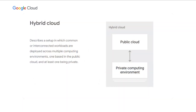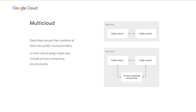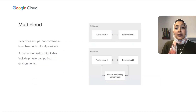So what is the difference between hybrid and multi-cloud? If we take hybrid first, this is where you have workloads deployed across multiple environments — one being a private on-prem data center and one in the public cloud. Multi-cloud, on the other hand, combines at least two public cloud environments, but you can also have a private computing environment as part of your multi-cloud setup. So really, multi-cloud is a superset of hybrid cloud.